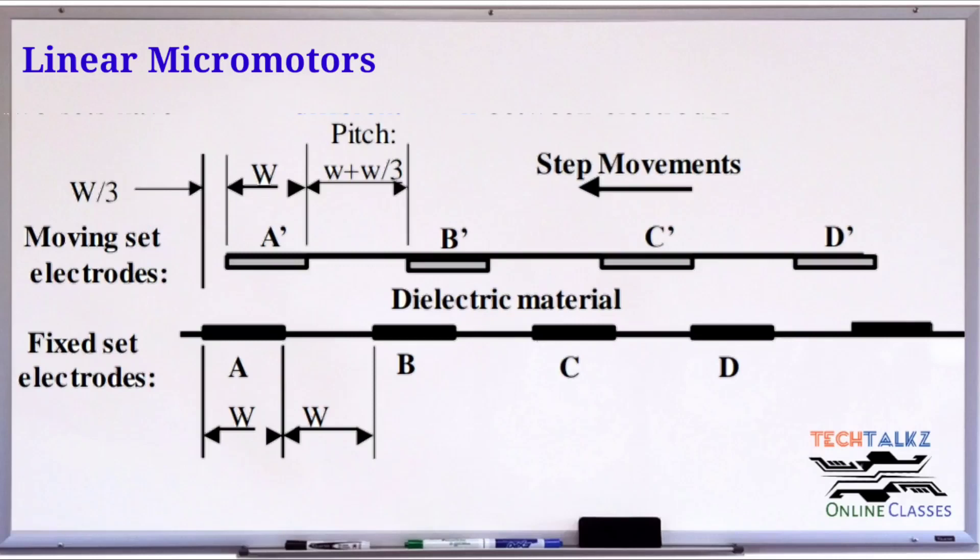At the same time, B B-dash is now in aligned condition. Wait, B and B-dash are still misaligned by a factor W by 3. This is because the bottom plate pitch is W, while the top plate pitch has a slight variation at W plus W by 3.